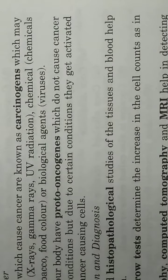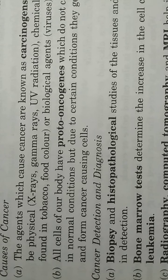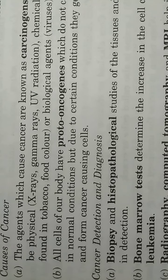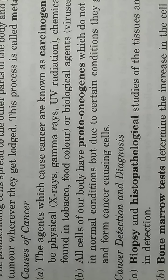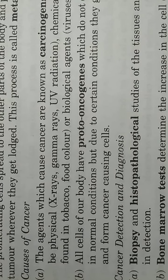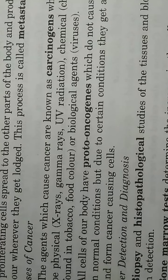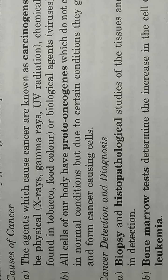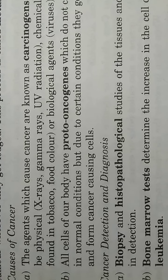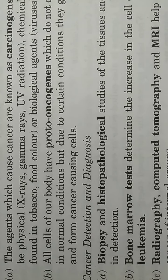Carcinogens chemical भी हो सकते हैं, यानि जिसमें chemicals शामिल हैं, found in tobacco और food colors। और ये biological agents भी हो सकते हैं, जैसे कि viruses। तो carcinogens physical, chemical, और biological तीनों प्रकार के हो सकते हैं।